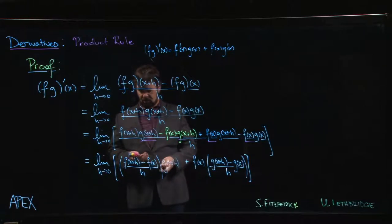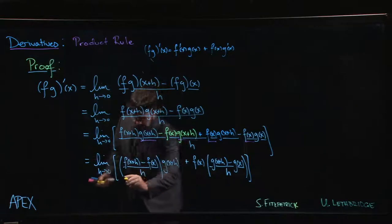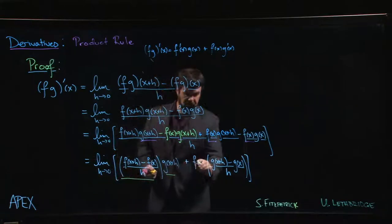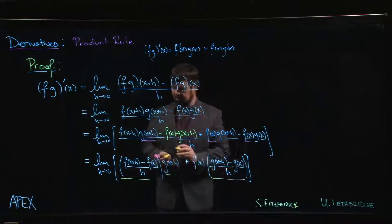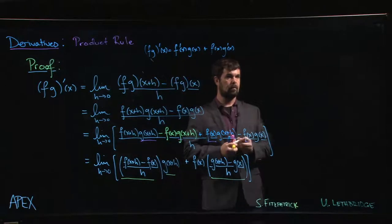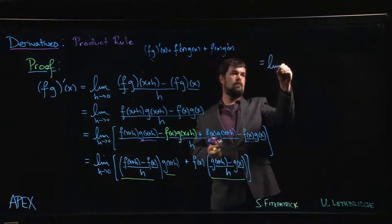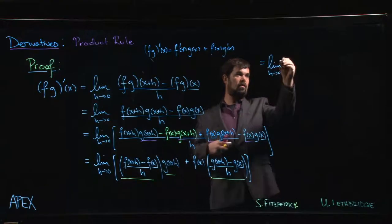Last thing now is limit properties. Limit of a sum is sum of the limits, and remember that this limit is with respect to h. So we look and we see where are the things that depend on h. This depends on h, this depends on h, this does not, this depends on h. So we break things up.